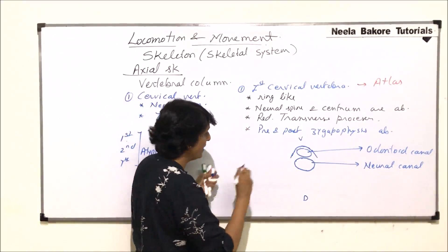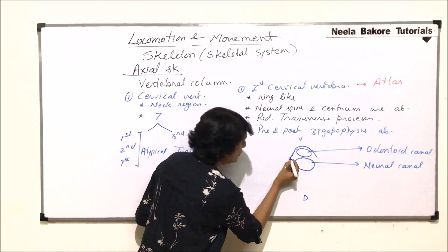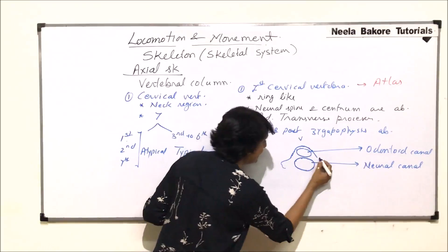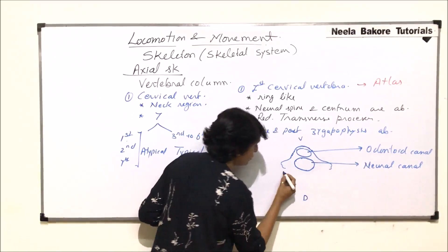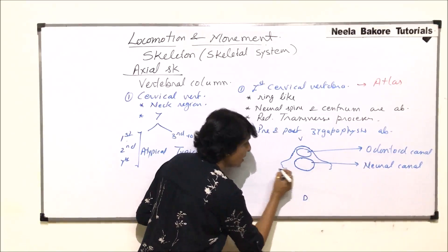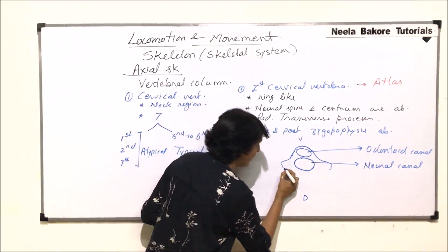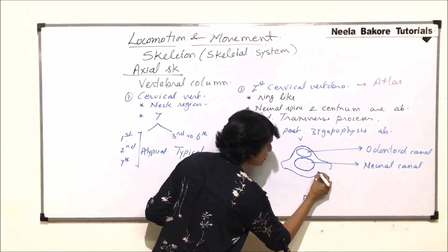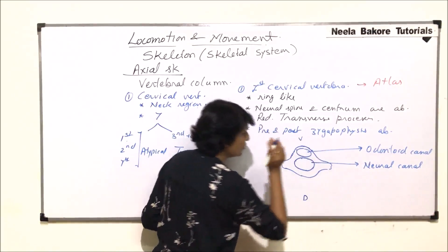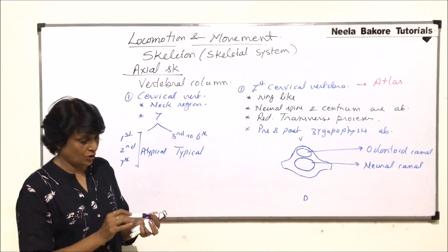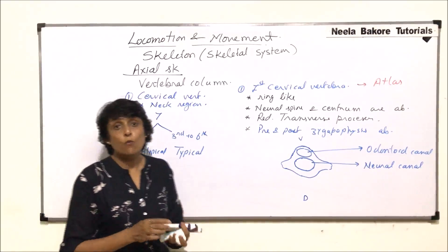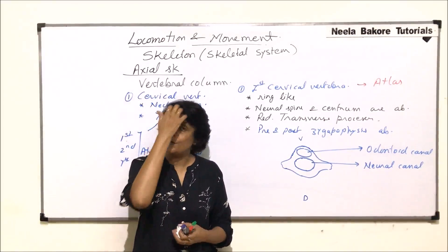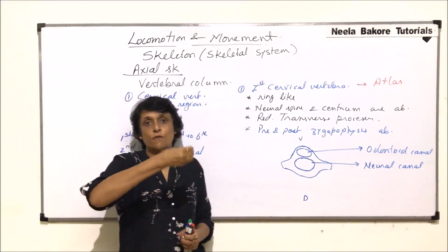The transverse processes are reduced but present. Since there is no neural spine, we just have the arch present on either side. This is why atlas looks like a ring-like structure.